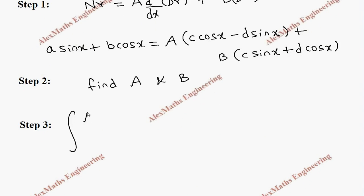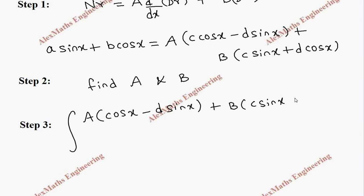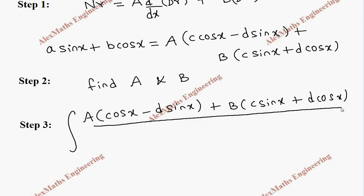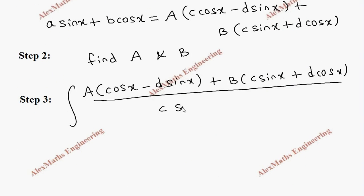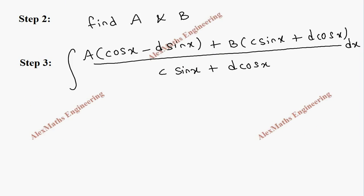After finding A and B, in step 3 the entire numerator is replaced with this expression. So the integral becomes: A·(c cosx − d sinx) + B·(c sinx + d cosx), all divided by the denominator (c sinx + d cosx), dx.